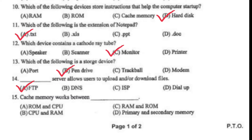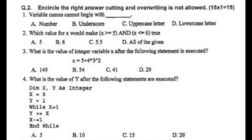Cache memory works between CPU and RAM. Variable names cannot begin with a number. Which value for x would make the condition x >= 5 AND x <= 6 true? The AND operation is used here.